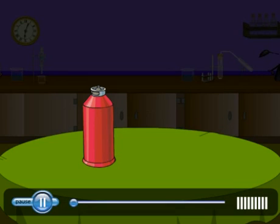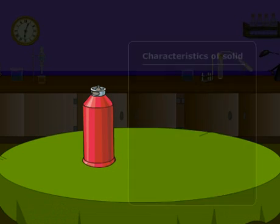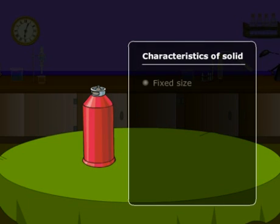You see this bottle - it's a solid. Because it's a solid, it has a fixed size, fixed shape, and volume.